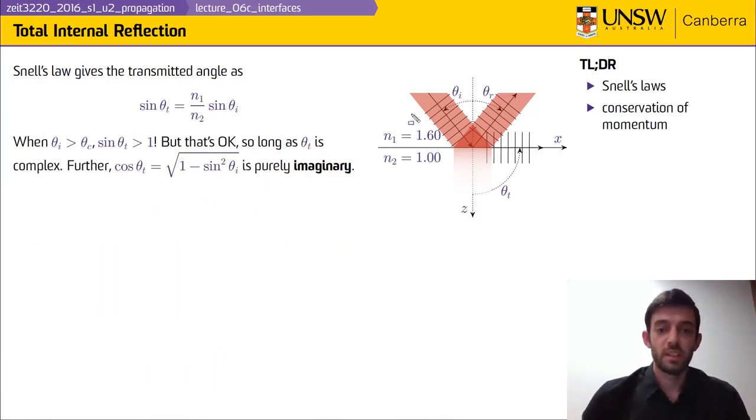So when this angle θ_i is greater than θ_c, then all of a sudden sin θ_t becomes greater than one, which might be a problem. But in reality it's okay because θ_t can also be complex, which means that the momentum that we were talking about in the background are re-expressed and we have both a propagating and a decaying momentum with different parts being assigned to different directions.